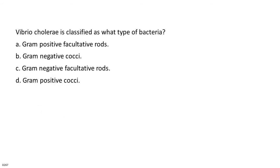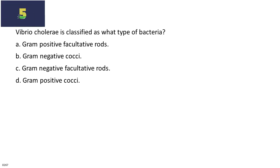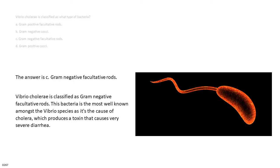Neisseria gonorrhoeae is classified as what type of bacteria? A. Gram-positive facultative rods. B. Gram-negative cocci. C. Gram-negative facultative rods. D. Gram-positive cocci. The answer is C. Gram-negative facultative rods. Vibrio cholerae is classified as gram-negative facultative rods. This bacteria is the most well-known amongst the vibrio species as it is the cause of cholera, which produces a toxin that causes very severe diarrhea.